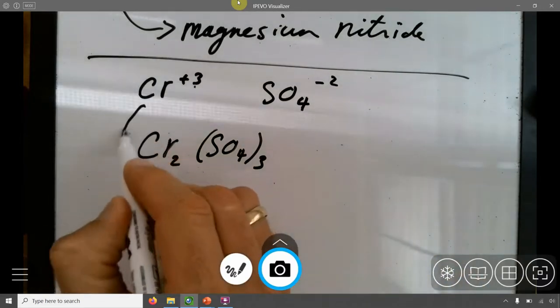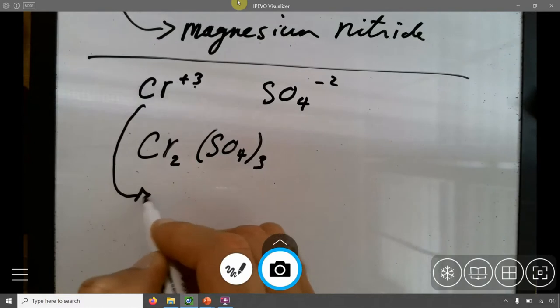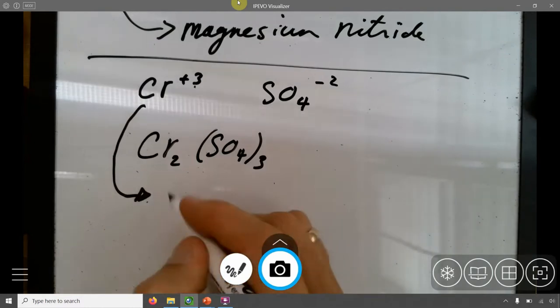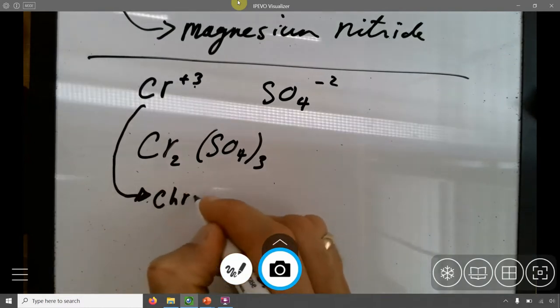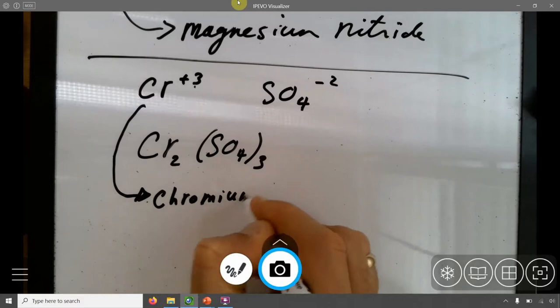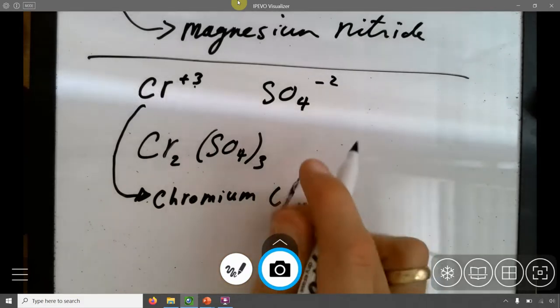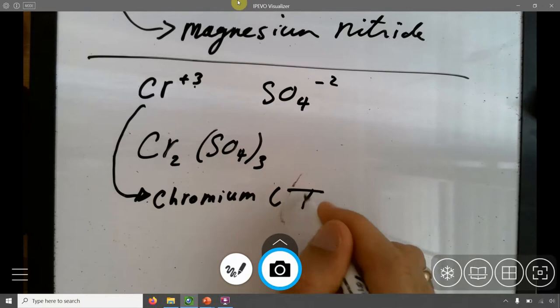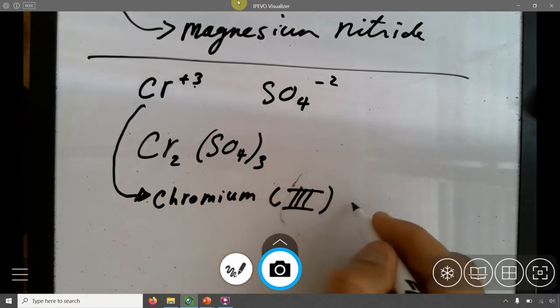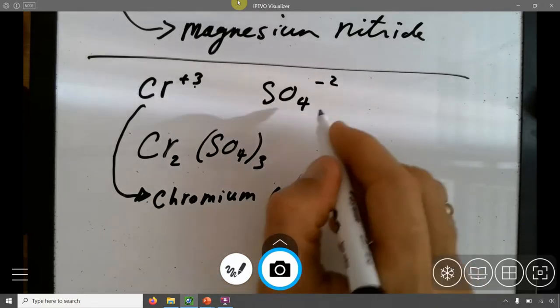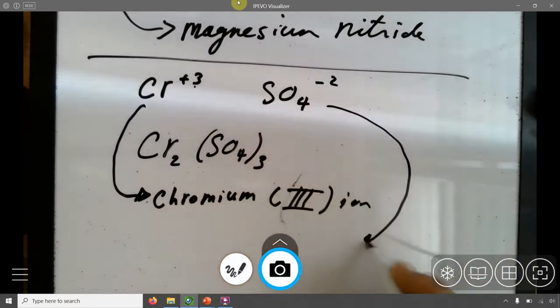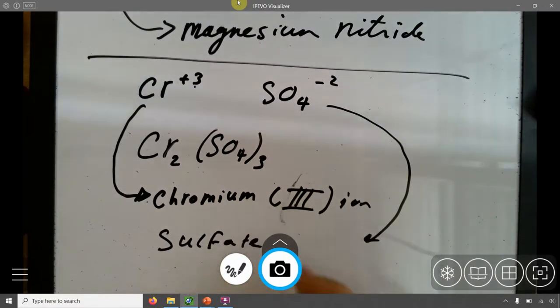Now I need to name this thing. This is not group one, and it's not group two, and it's not group three. So I need to indicate the charge. So this is chromium, one, two, three, not easily discernible. Sorry, one, two, three ion. And this is, for you to memorize, this is the sulfate ion.